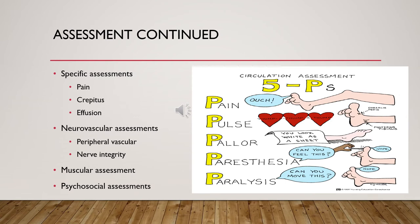Continuing the physical assessment of the musculoskeletal system: we assess specific findings such as pain — rating it on a zero-to-ten scale, describing it, noting onset, frequency, and duration. Crepitus is a popping or cracking felt in the joint as it moves or is palpated. Effusion is fluid accumulation — commonly seen in the knee joint after injury — where swelling makes it difficult for the patient to bend the joint, and visible swelling may be present.